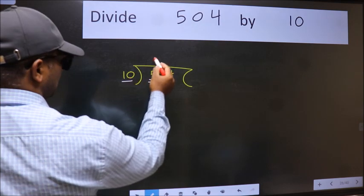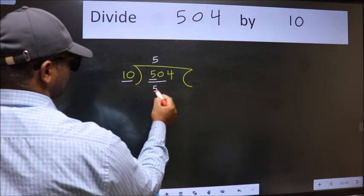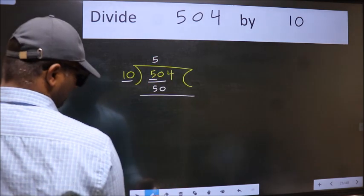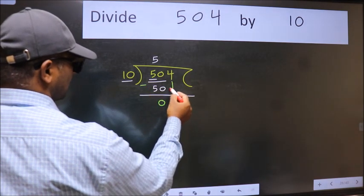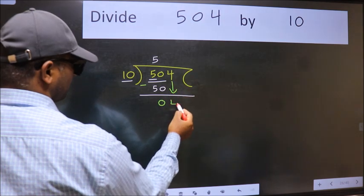When do we get 50 in 10 table? 10 fives is 50. Now we should subtract. We get 0. After this, bring down the beside number, so 4 down.